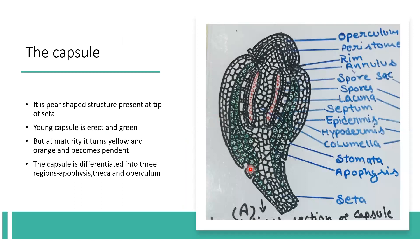The capsule is present at the tip of the seta. This capsule has a cap part called the apiculum. The cap is separated from the capsule by a constriction called the rim, and above the rim is present the annulus. The annulus is made up of thin-walled cells which mark the separation of the apiculum at the time of dehiscence. The thin-walled cells of the annulus are destroyed, separating the upper cap-like apiculum which drops off, thus exposing the peristome. So the annulus helps in separation of the apiculum from the capsule for liberation of spores during dehiscence.